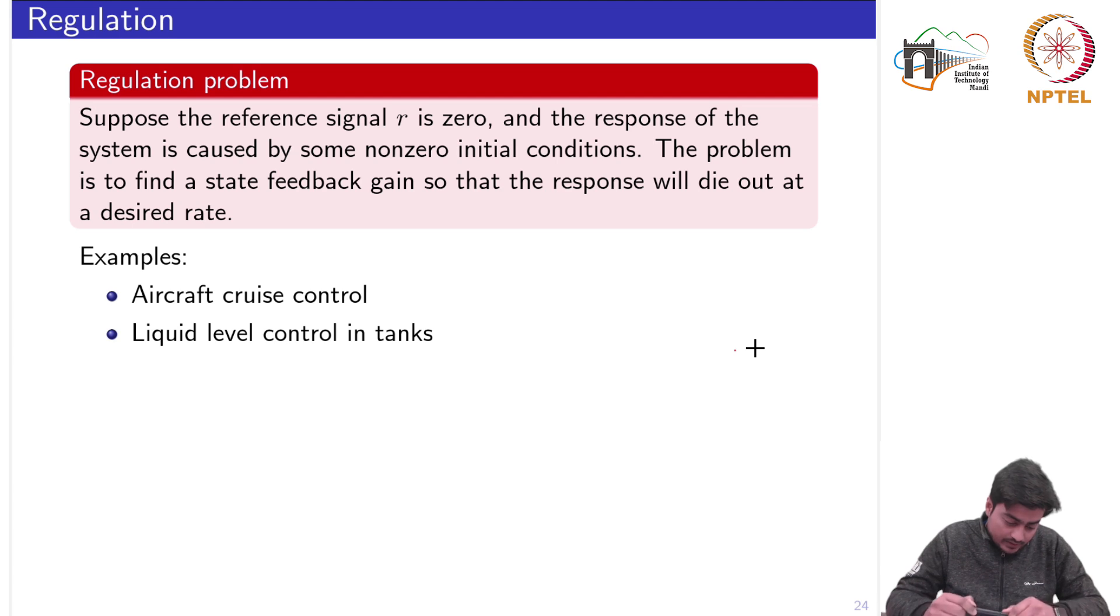The regulation problem deals with the fact that suppose the reference signal r is zero and the response of the system is caused by some non-zero initial conditions. The problem is to find a state feedback gain so that the response will die out at a desired rate.